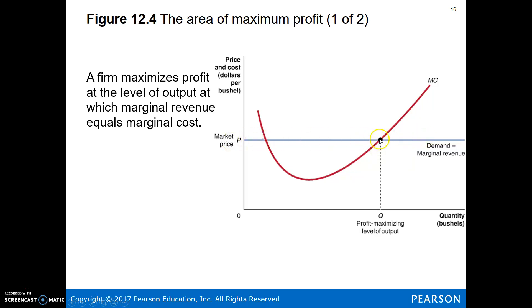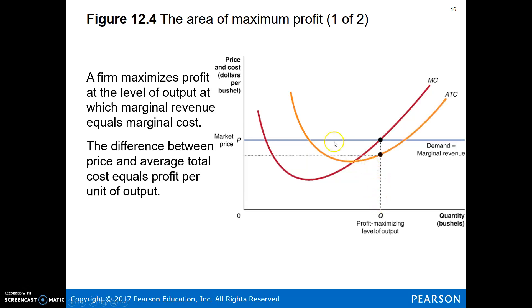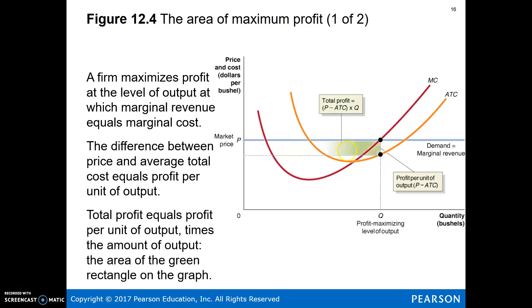Here's our profit maximizing quantity. And here is our average total cost curve. If we want to calculate our profit, it's this rectangle — P minus ATC times Q. We go at this quantity up to the ATC curve, and that rectangle is our profit. P times Q is the whole rectangle — total revenue — minus total cost. Our total cost is ATC times Q at this quantity. So we have this big rectangle for total revenue minus a slightly smaller rectangle for total cost — that leaves us a profit, the green rectangle.